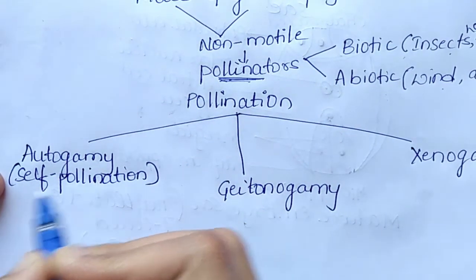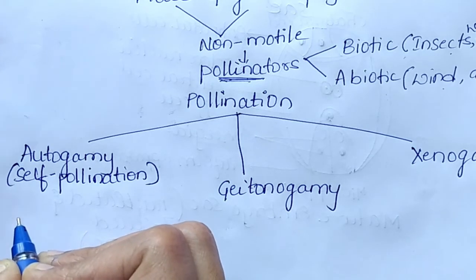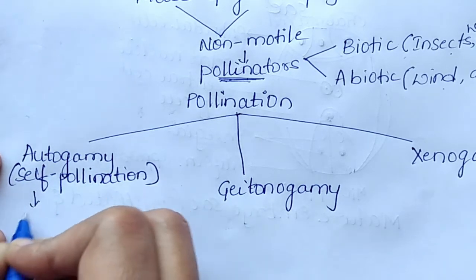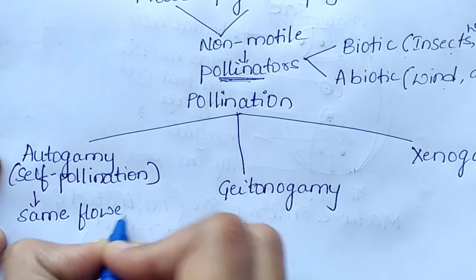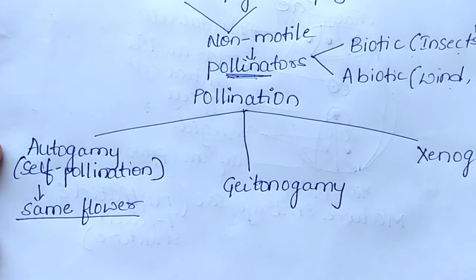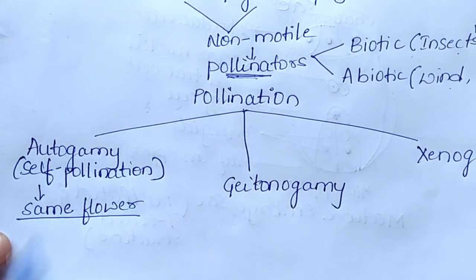Autogamy is nothing but transfer of pollen grains from the anther to the stigma within the same flower. For example, in hibiscus flower, pollination occurs within the same flower itself. This is called autogamy or self-pollination.